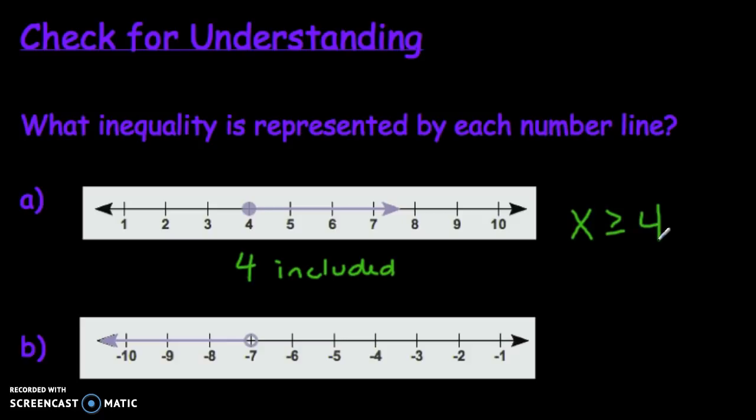On B, if you notice a good clue there is it's not shaded in, it's an open circle, so negative 7 is not included. And it looks like everything to the left of negative 7 is shaded. So here we're looking at values where x is less than negative 7.